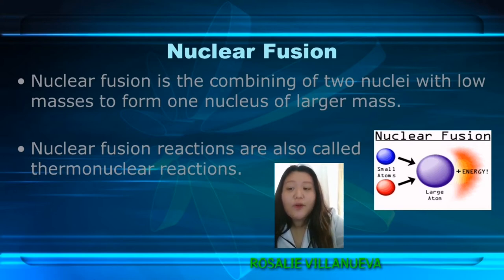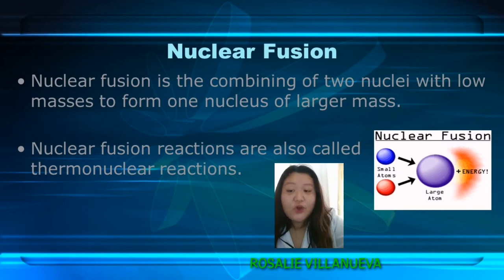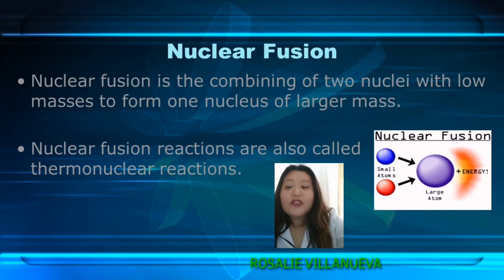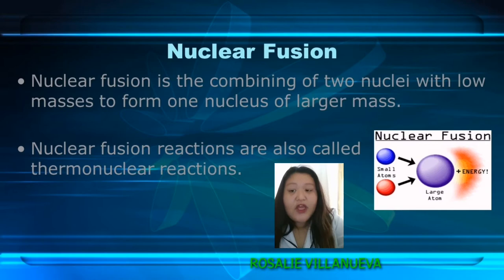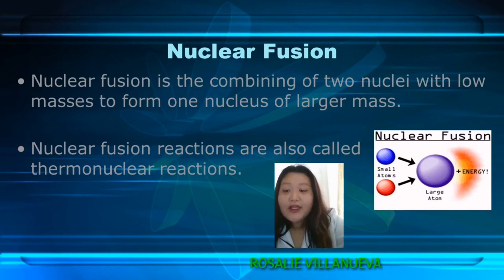Deuterium has an extra neutron in its nucleus and can replace one of the hydrogen atoms in H2O to make what is called heavy water. Tritium has two extra neutrons and is therefore three times as heavy as hydrogen. In a fusion cycle, tritium and deuterium are combined, resulting in the formation of helium.